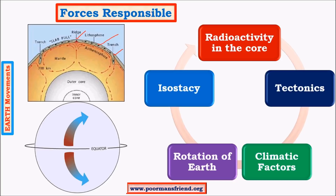Different latitudes receive different amounts of heat due to their position — the equator receives greater heat and the poles receive lesser heat. This energy differential causes the movement of winds, and also brings various weather phenomena like precipitation and cyclones. All these factors are responsible for movements on the earth's surface.